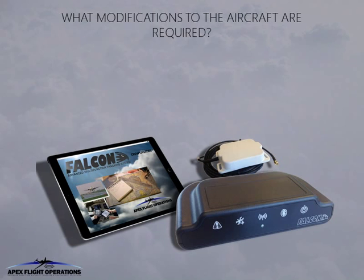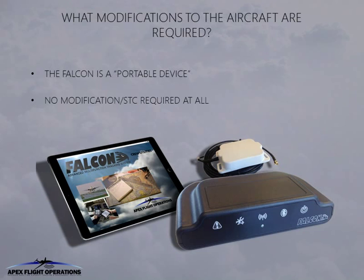The Falcon system is classified by aviation authorities as a portable device and requires no modification of the aircraft. The components are typically mounted with aviation grade Velcro and power is received from the aircraft's auxiliary power plug. If required, however, the power can be connected to the avionics bus via a 2-amp circuit breaker, which may require a minor modification under local regulations.